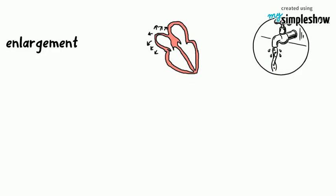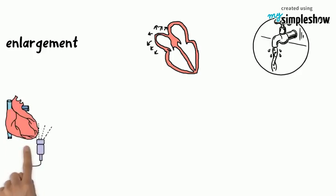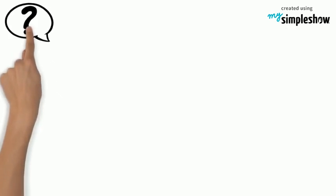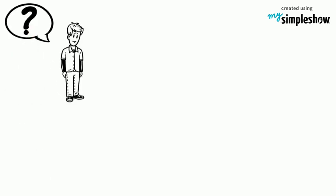P-wave represents atrial depolarization. So if there is any abnormality in the atrium, we can identify it from P-wave morphology and P-wave axis. What is meant by P-wave axis?